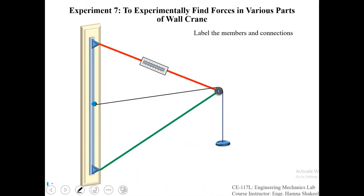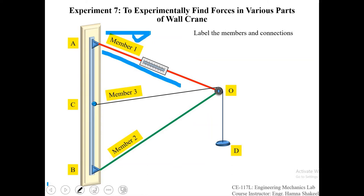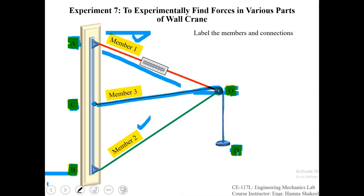Now that we understand the mechanism of the wall crane, we can start with the procedure. The first step is to label the members and connections. We call the tie member 1, the strut member 2, the hinge connection of the tie connection A, the connection of the strut connection B, the string member 3, and its connection is connection C. This part is labeled O, and the hanger where you apply the load is labeled D. After labeling, read the spring balance — it will show some reading due to the self-weight of the members. Call that reading T-I, the initial tension.